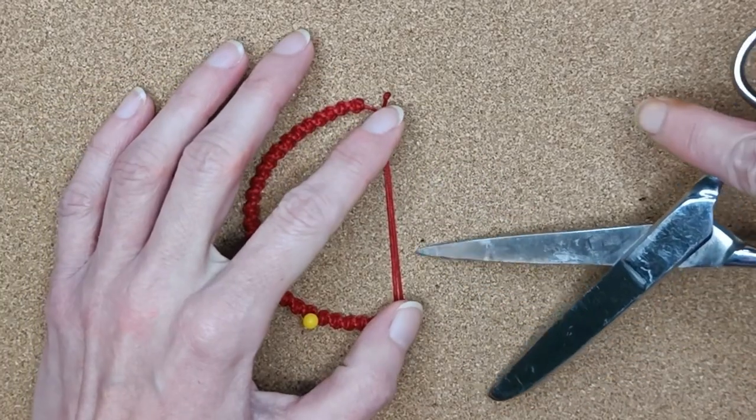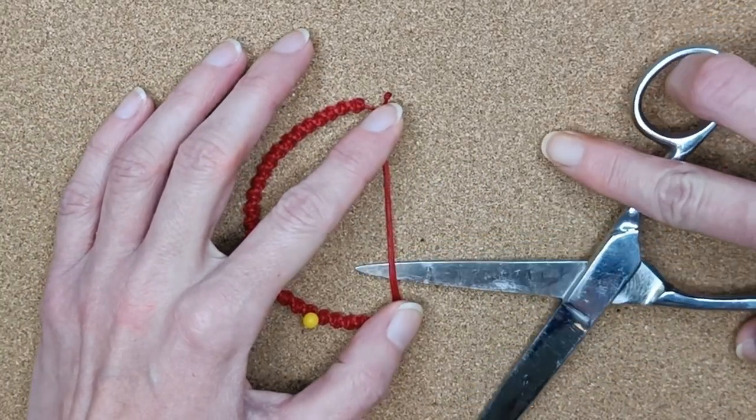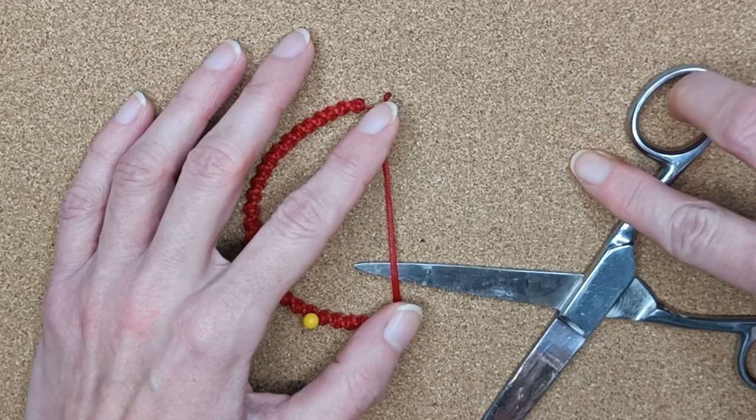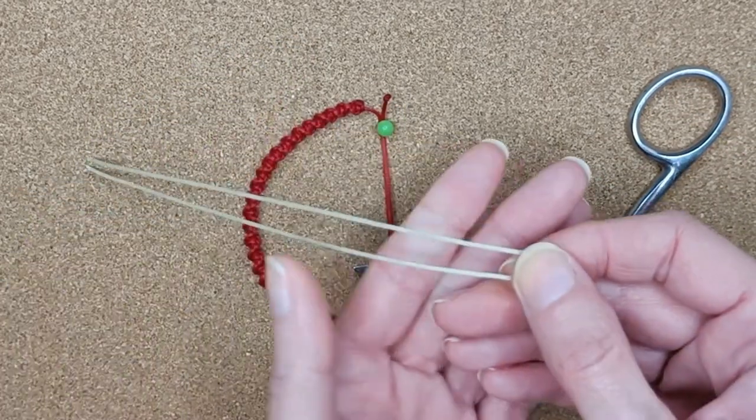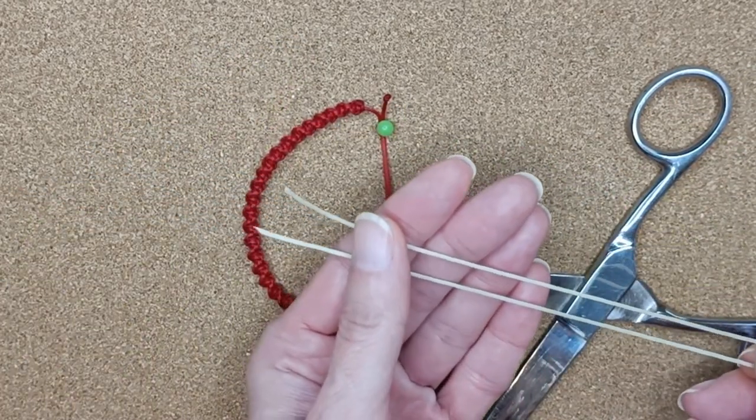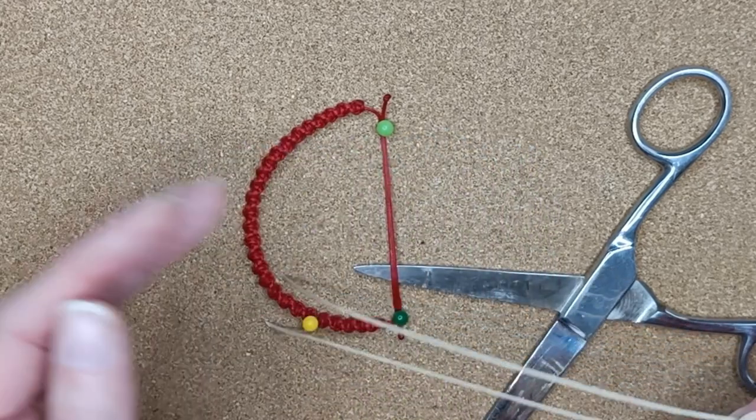I always put my scissors under the two middle cords in order to create a gap. This way, I found out I can make my closure without any unwanted trouble.